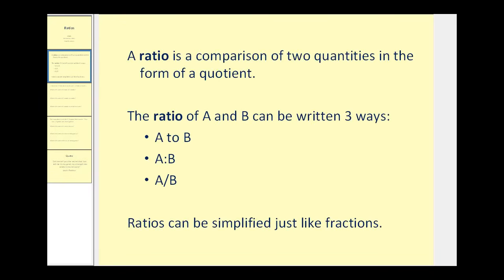A ratio is a comparison of two quantities in the form of a quotient. The ratio of A and B can be written three different ways: A to B, A colon B, or A divided by B written in fraction form.